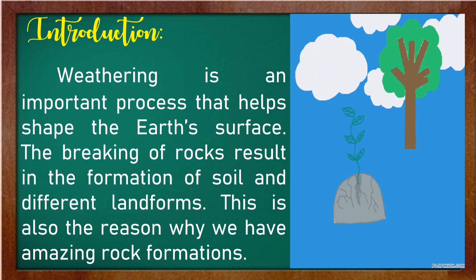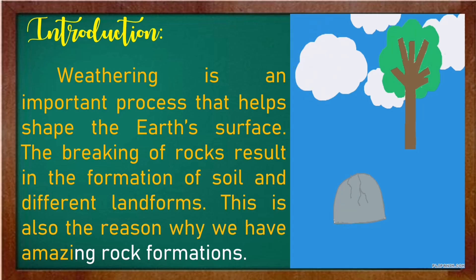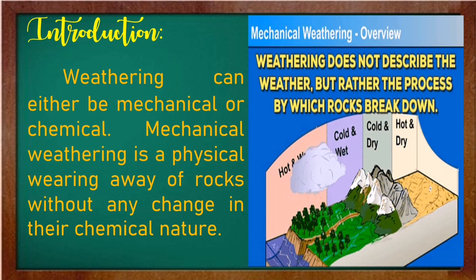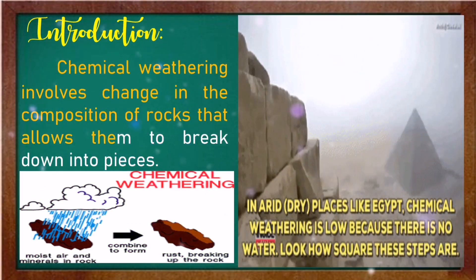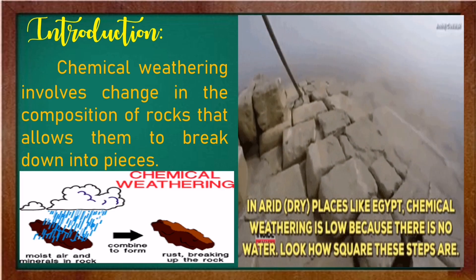Weathering is an important process that helps shape the Earth's surface. The breaking of rocks results in the formation of soil and different landforms. This is also the reason why we have amazing rock formations. Weathering can either be mechanical or chemical. Mechanical weathering is a physical wearing away of rocks without any change in their chemical nature. Chemical weathering involves change in the composition of rocks that allows them to break down into pieces.